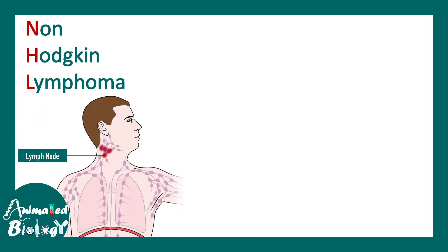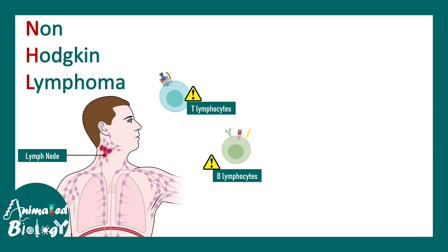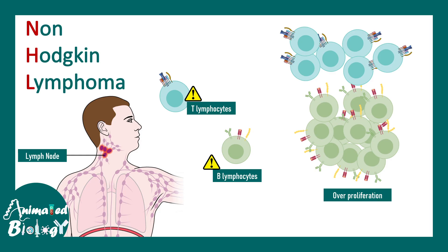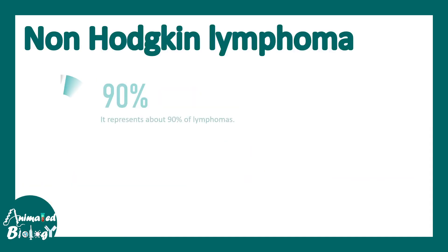In non-Hodgkin lymphomas the lymph nodes are affected. The T lymphocytes and the B lymphocytes reside in the lymph node. In this case they proliferate rapidly and they are not dying — they keep on dividing and they survive, obviously leading to these sorts of malignancies.